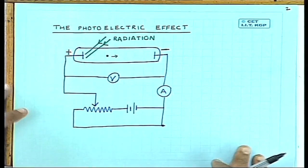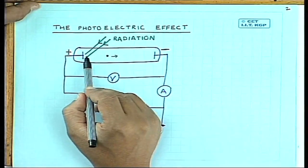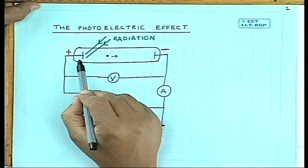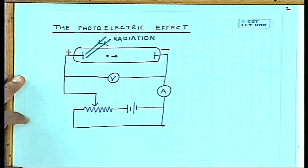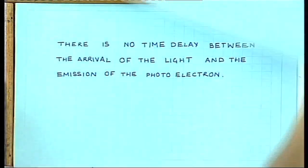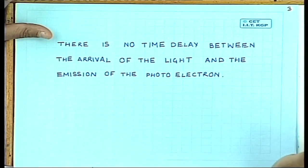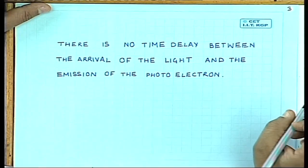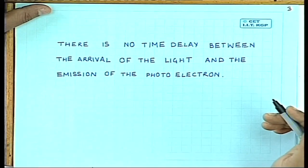This is what is called the photocurrent. The photocurrent measures the fraction of electrons emitted from the plate which have sufficient energy to overcome the potential gradient V. The first interesting feature observed in this experiment is that there is no time delay between the incidence of the radiation and the start of the current. The moment you switch on the radiation, the current starts immediately.